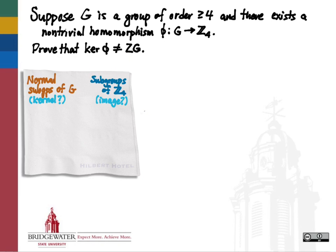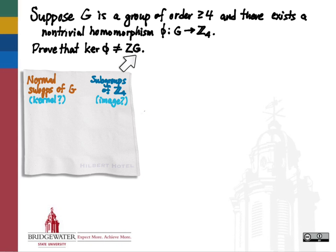The claim is that if this non-trivial homomorphism from g to Z mod 4 exists, then either its kernel — the set of elements of g that are getting sent to the identity — has to be smaller than the center, meaning there's something in the center which is not going to the identity element, or this kernel would have to be bigger than the center. It can't kill the center and only the center.